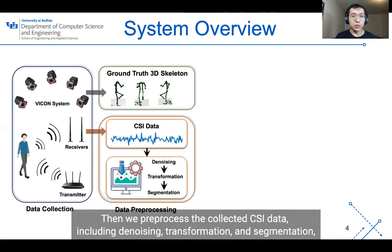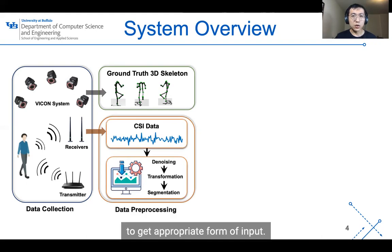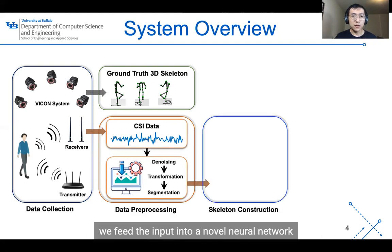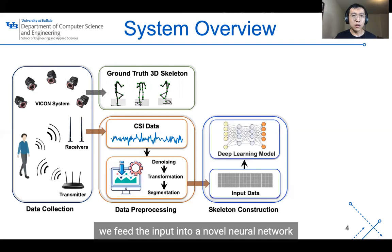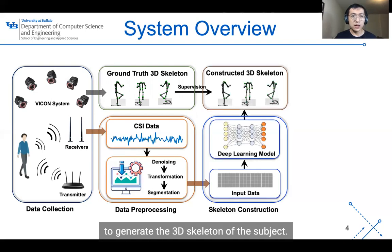Then, we pre-process the collected CSI data, including denoising, transformation, and segmentation to get the appropriate form of input. Finally, we feed the input into a novel neural network to generate the 3D skeleton of the subject.